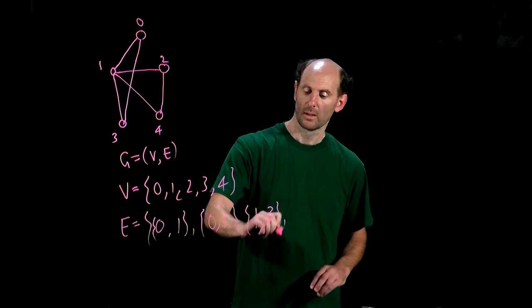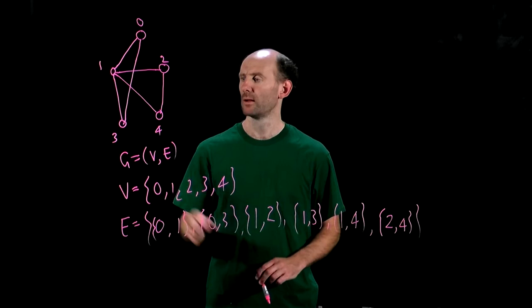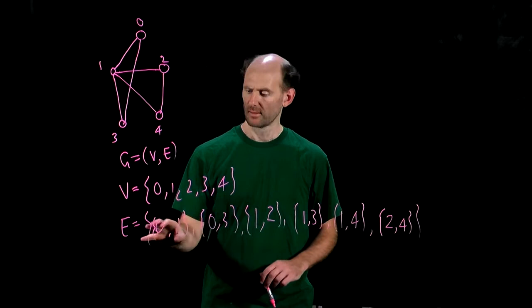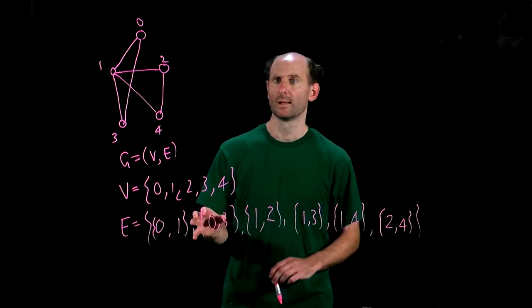The six elements of our edge set correspond to the six lines in the graph. Notice that these are sets so they cannot have repeated elements. In particular we cannot have repeated edges.